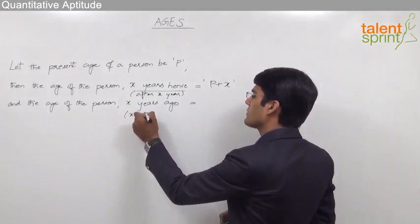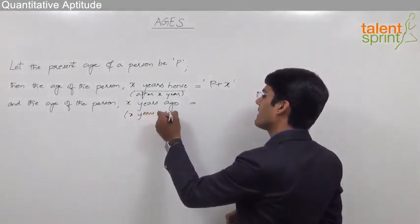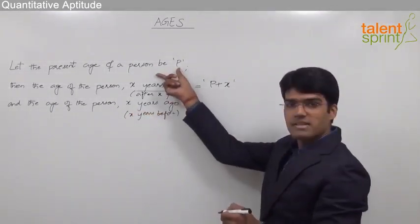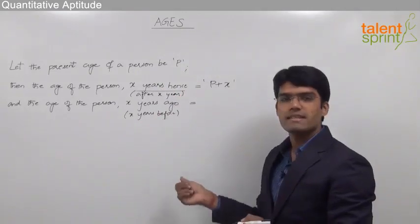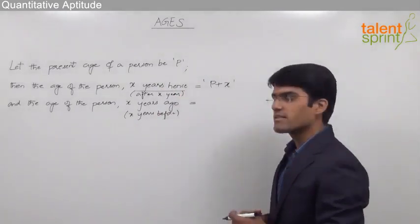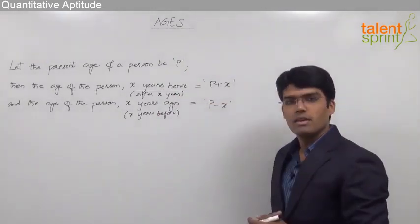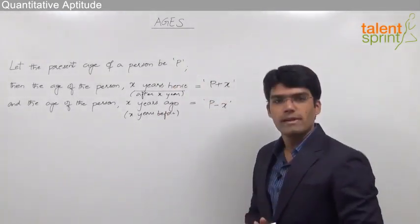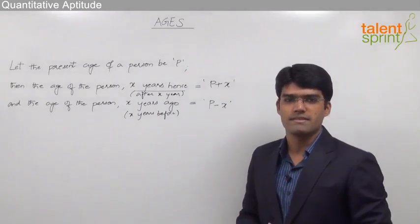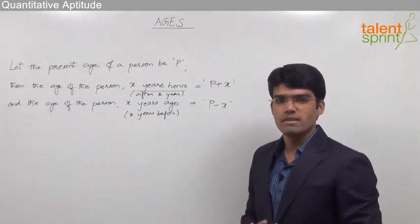So if the present age of a person is P, then his age X years ago or before X years will be equal to P minus X. So these two points are very frequently used while solving questions on ages. Let us now take some examples from ages.